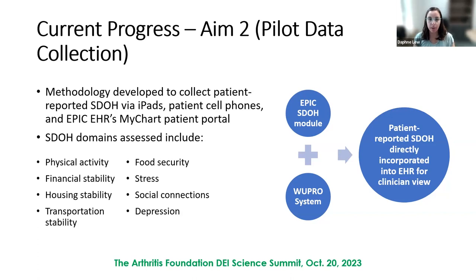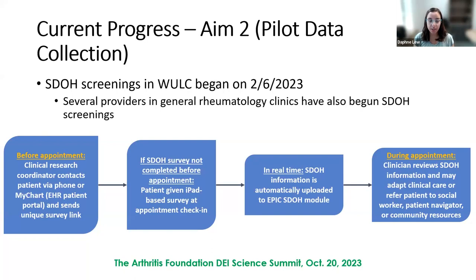This methodology assesses the domains of physical activity, financial stability, housing stability, transportation stability, food security, stress, social connections, and depression. We started screening in the lupus clinic here at Washington University in February of this past year, and we now have several providers in general rheumatology clinics also conducting these SDOH screenings. The diagram on this slide gives an overview of our workflow.